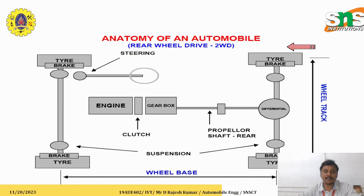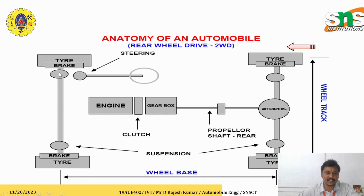First of all, we should know about the anatomy of an automobile. In the diagram, the brake unit is mounted on all the wheels. You can see the front axle and the rear axle, along with the engine, clutch, gearbox, and propeller shaft leading to the differential unit. This is the anatomy of a two-wheel drive vehicle.